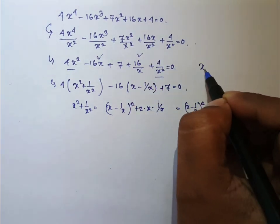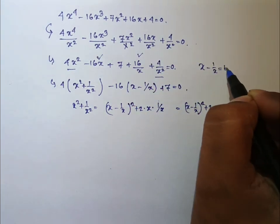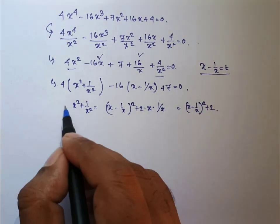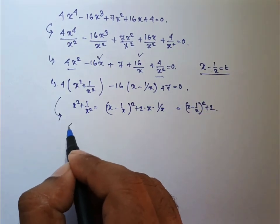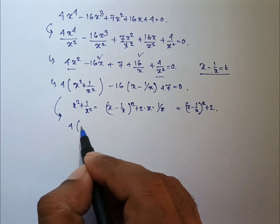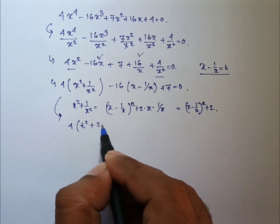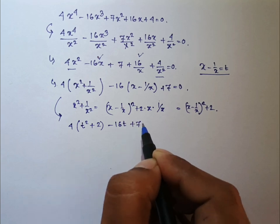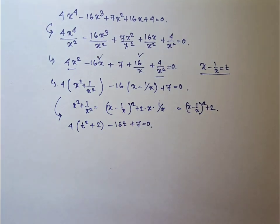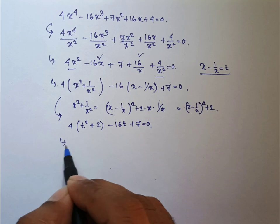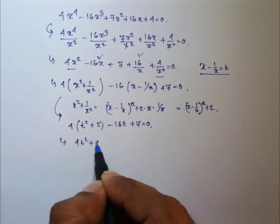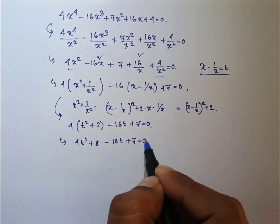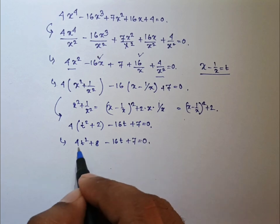Let us assume that x minus 1 by x equal to t, a different variable. Then the above expression becomes 4 into t square plus 2 minus 16t plus 7 equal to 0. That means it is 4t square plus 8 minus 16t plus 7 equal to 0.